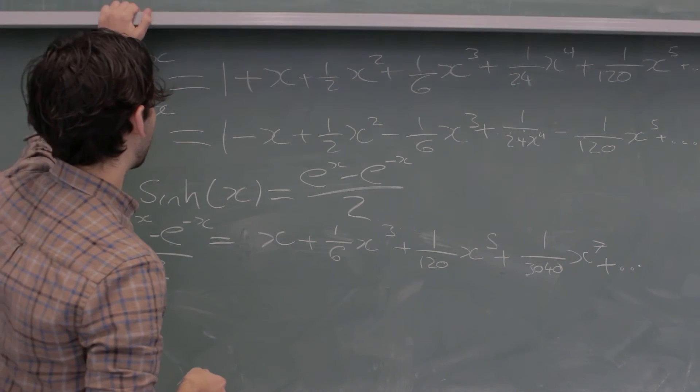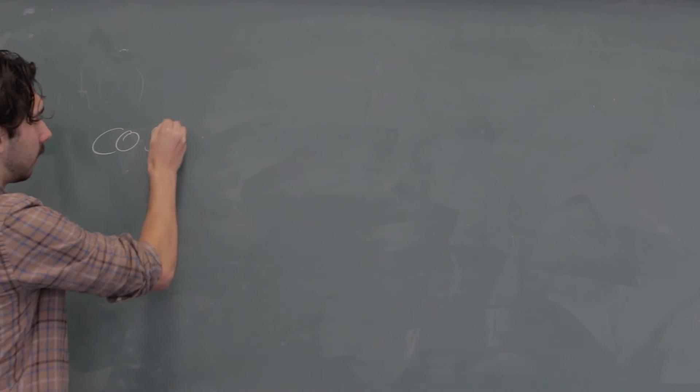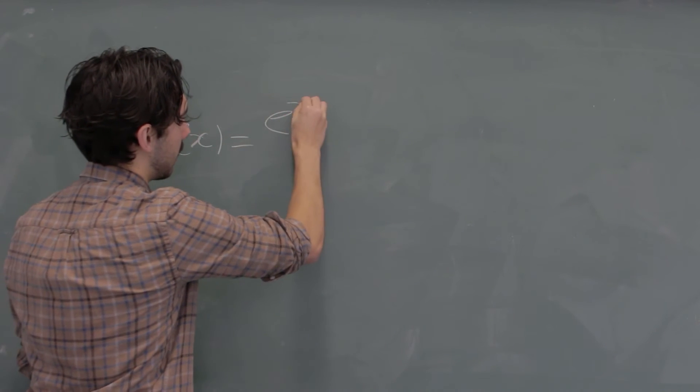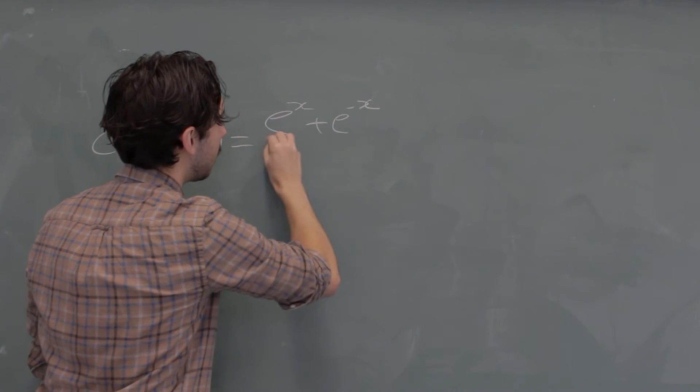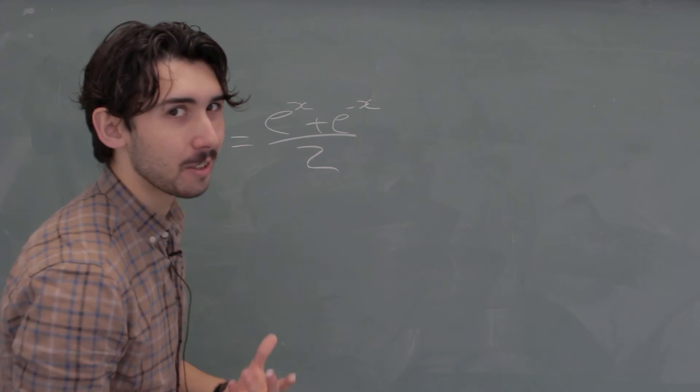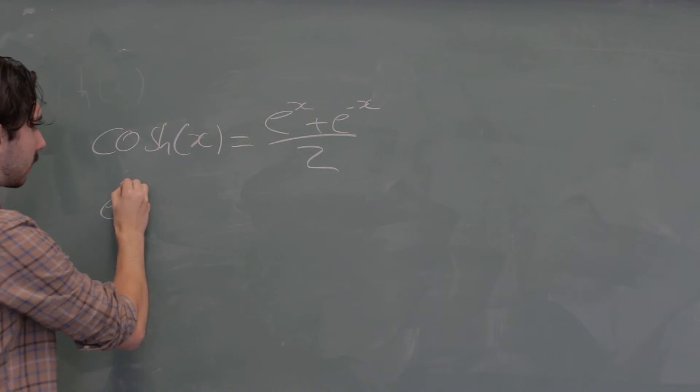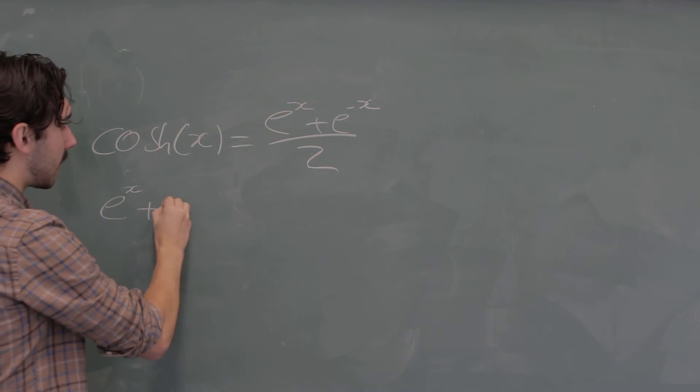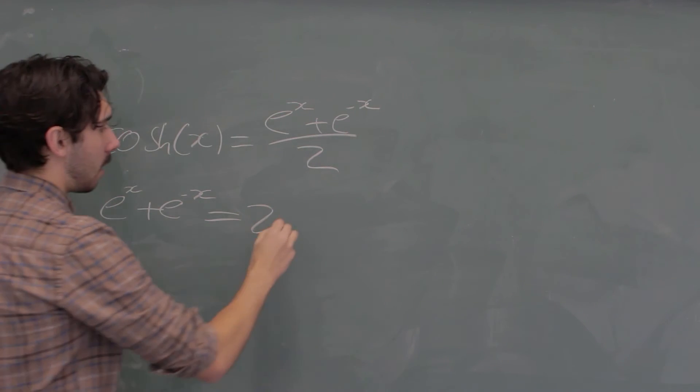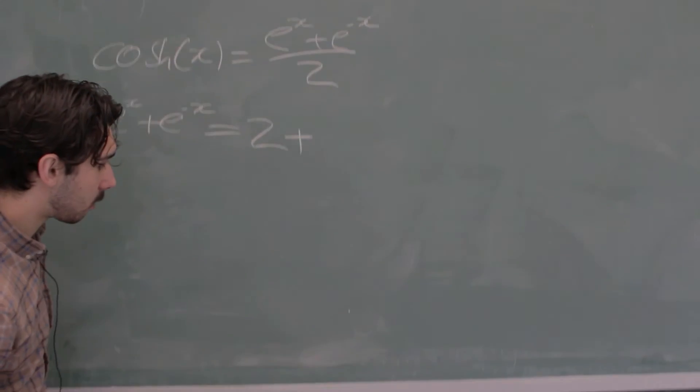All right, let's do cosh next. So because cosh is very similar to sinh, in fact it's e to the x plus e to the minus x over 2, we're just going to do the same thing as what we did before, we're just going to add the two series together. So if you remember what they are, you will know that the Maclaurin Series for e to the x plus e to the minus x will just be 2 plus, and then this is going to be all of the even powers, and again I'll show it to you, right.